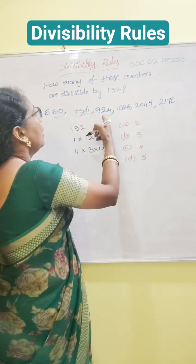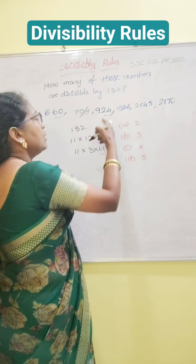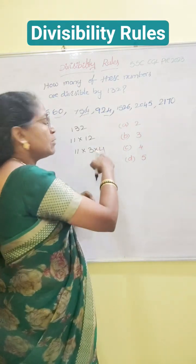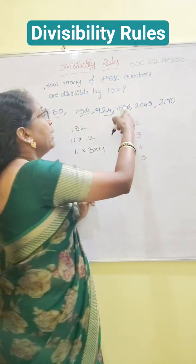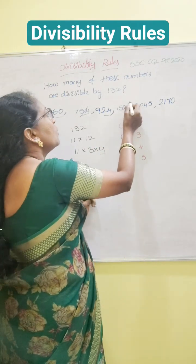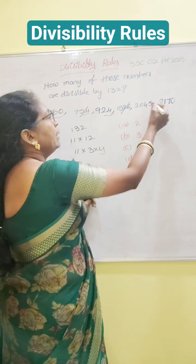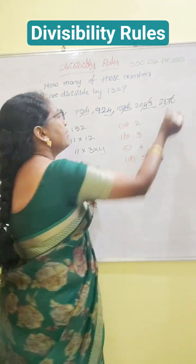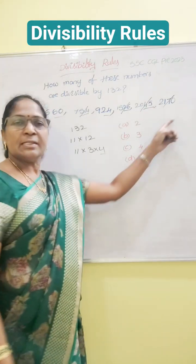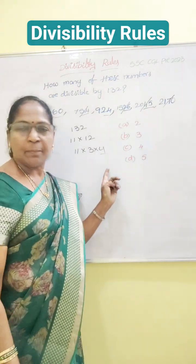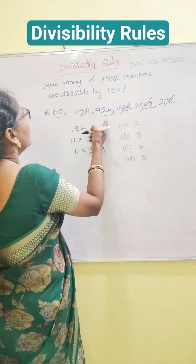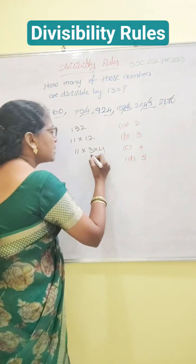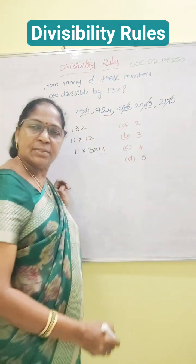So you can cancel that. Next — last 2 digits are 24, yes, this number is divisible by 4. Here, last digits are 26 — no. In this, last 2 digits are 45 — no. Again, 70 — this is also not divisible by 4. So what are the remaining 2 numbers? These 2 numbers. Next divisibility rule you have to check.